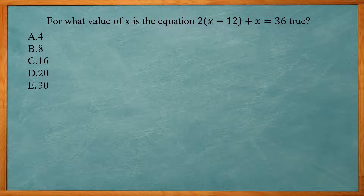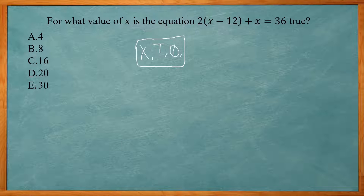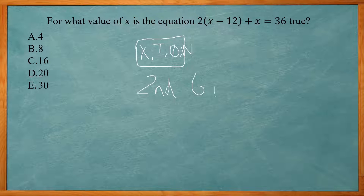I'm using a TI-83; the TI-84 is pretty much the same. I'm going to go to Y equals and put in the equation: 2, parentheses, x minus 12, close parentheses, plus x. For x, I'm using the button that says x, T, theta, and n. After you have that equation in there, I'm going to do second graph, which gives you a table of values for x and Y1.